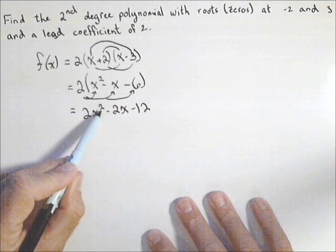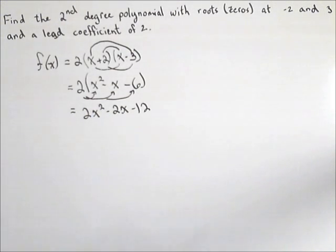So we see we have a second-degree polynomial because two is our highest exponent.